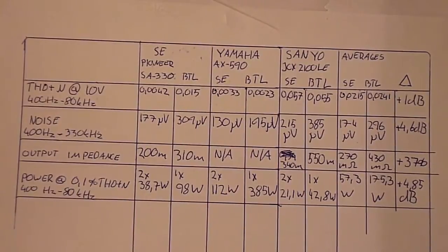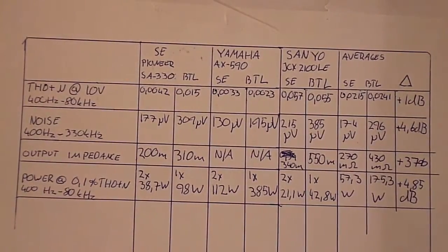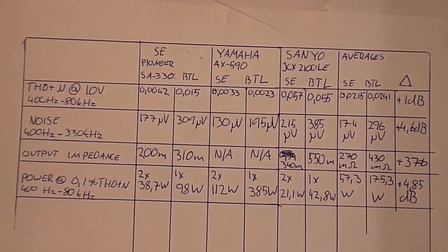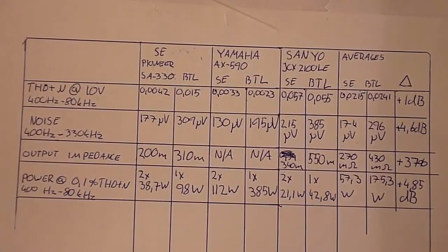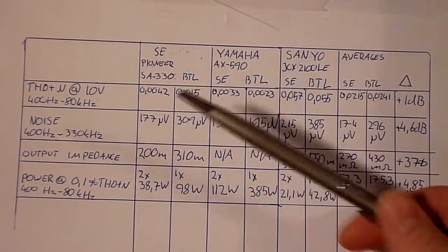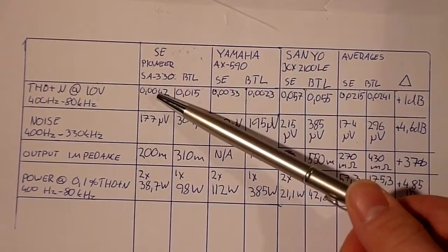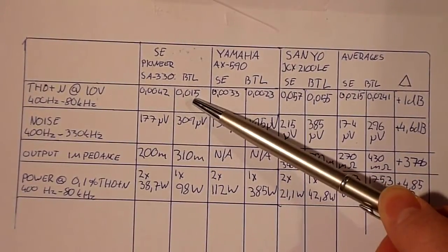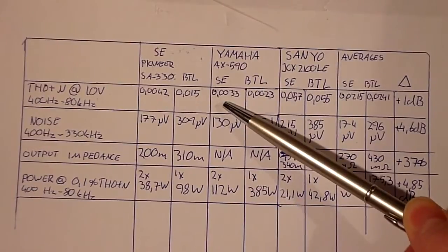Right, so I plotted the numbers up the old fashioned way, although I did use a calculator. And what we've got are the results for the tests of the Pioneer single-ended and bridged,